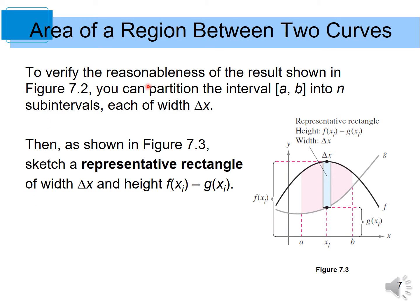To verify the result shown in the figure, you can partition the interval a to b into n subintervals, each of width delta x. Then, sketch a representative rectangle of width delta x and height f(x_i) minus g(x_i). Let's look at the figure here. This is a representative rectangle — the width is delta x and the height is f(x_i) minus g(x_i).